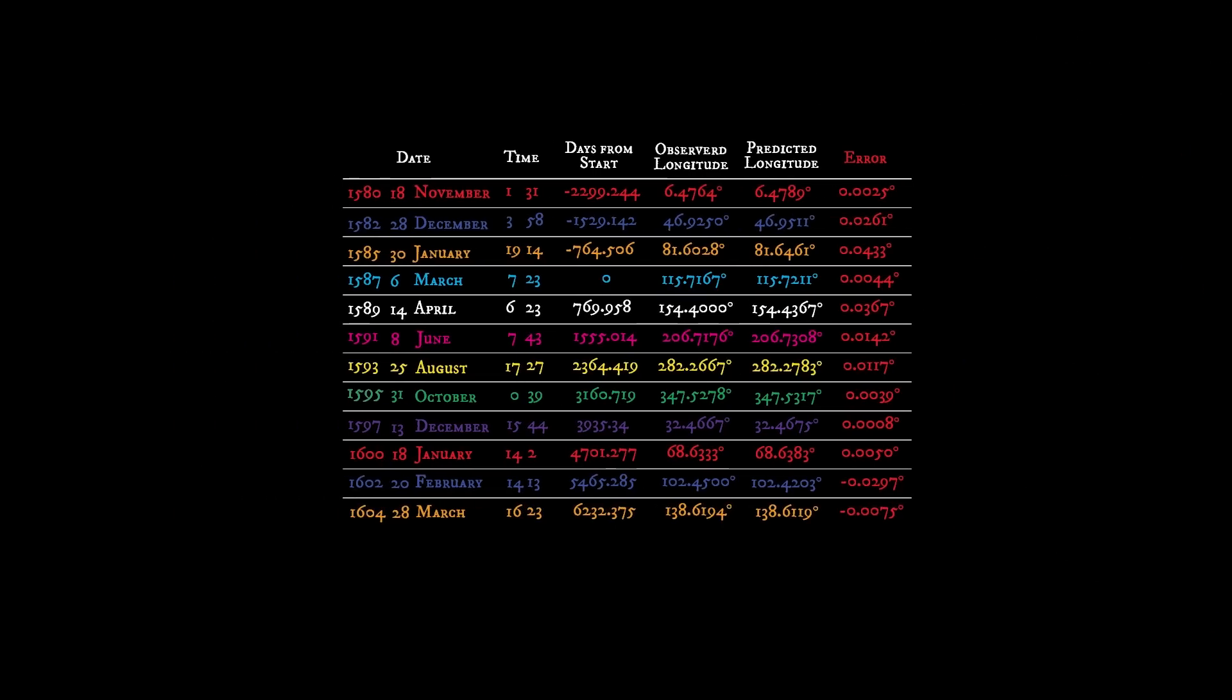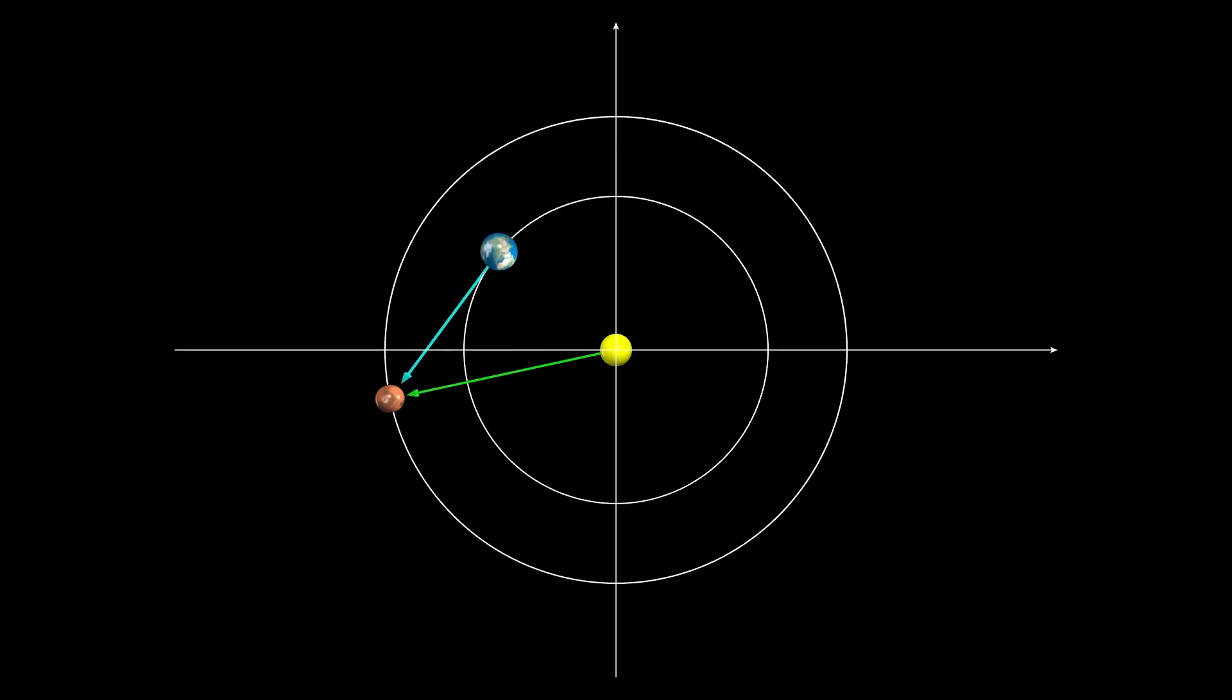Kepler developed and tested his model using a data set of 12 of Tycho Brahe's observations, each carefully chosen to occur when Mars was in opposition, where the Earth is directly between the Sun and Mars. This choice allowed Kepler to effectively ignore the location of Earth and pretend that Tycho's observations were taken from the Sun.